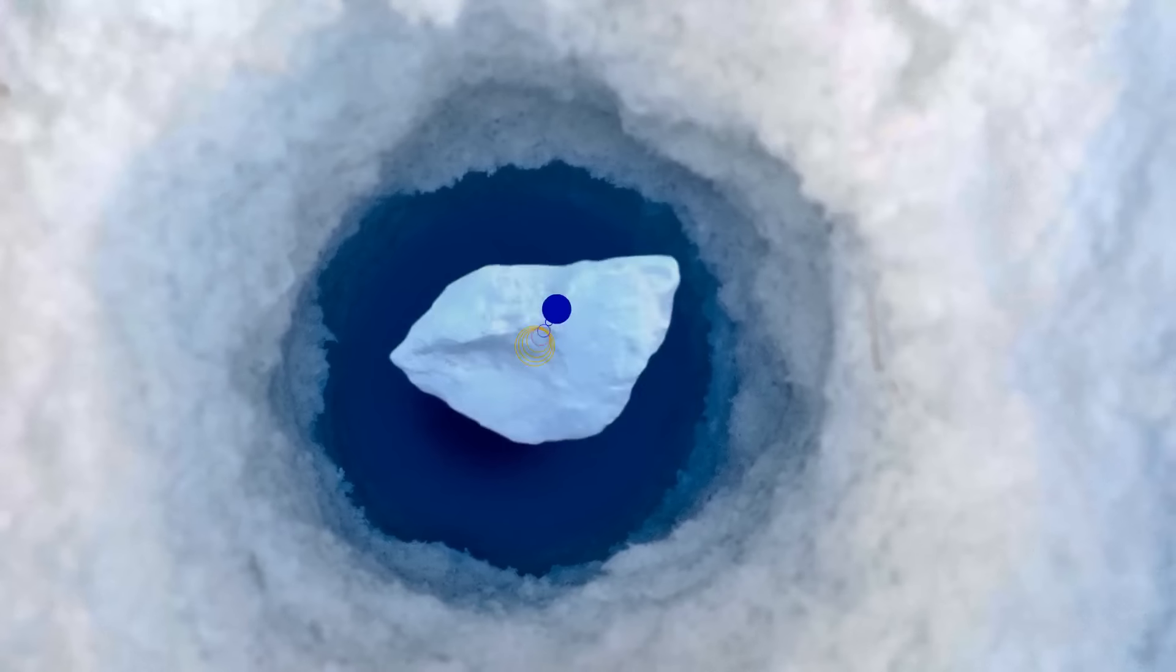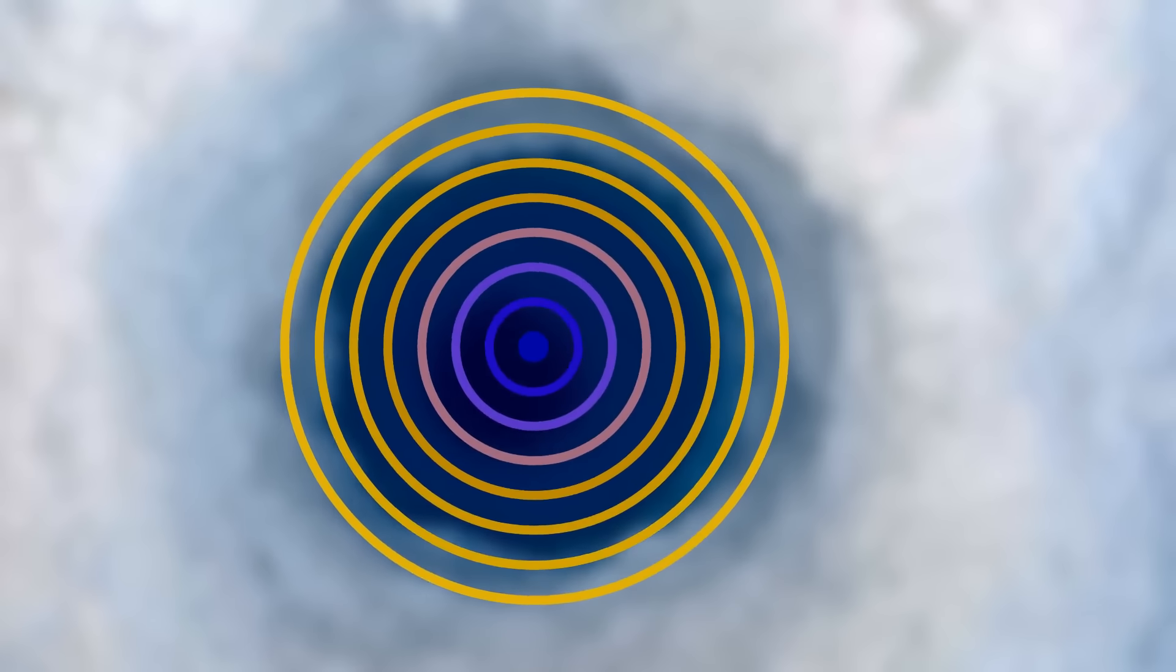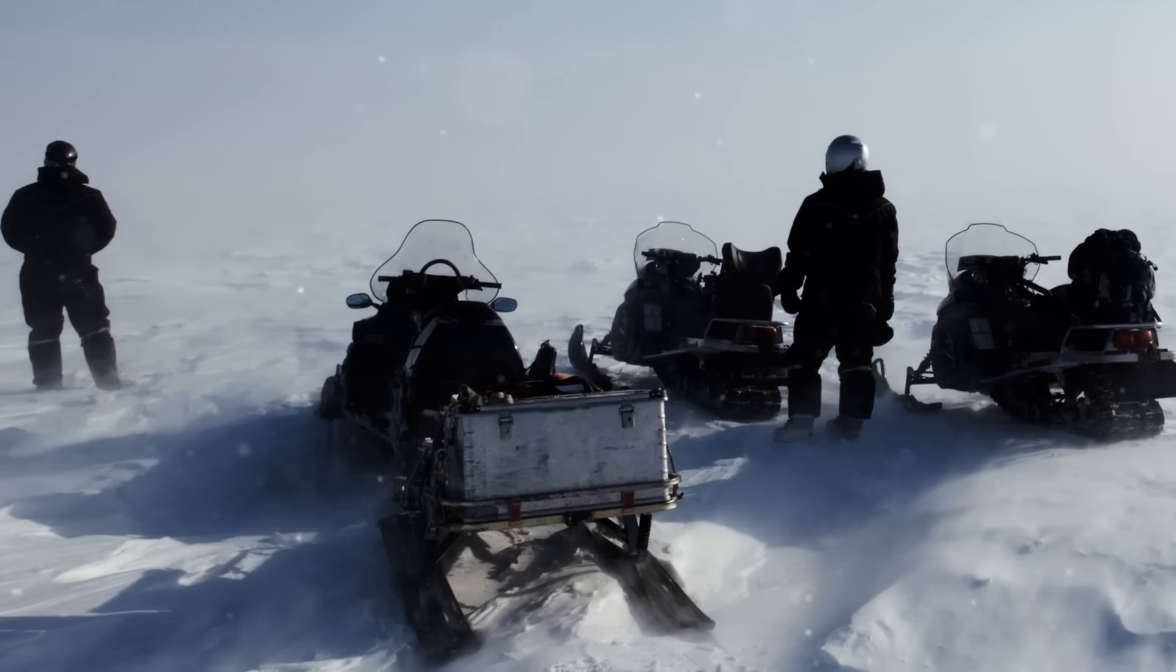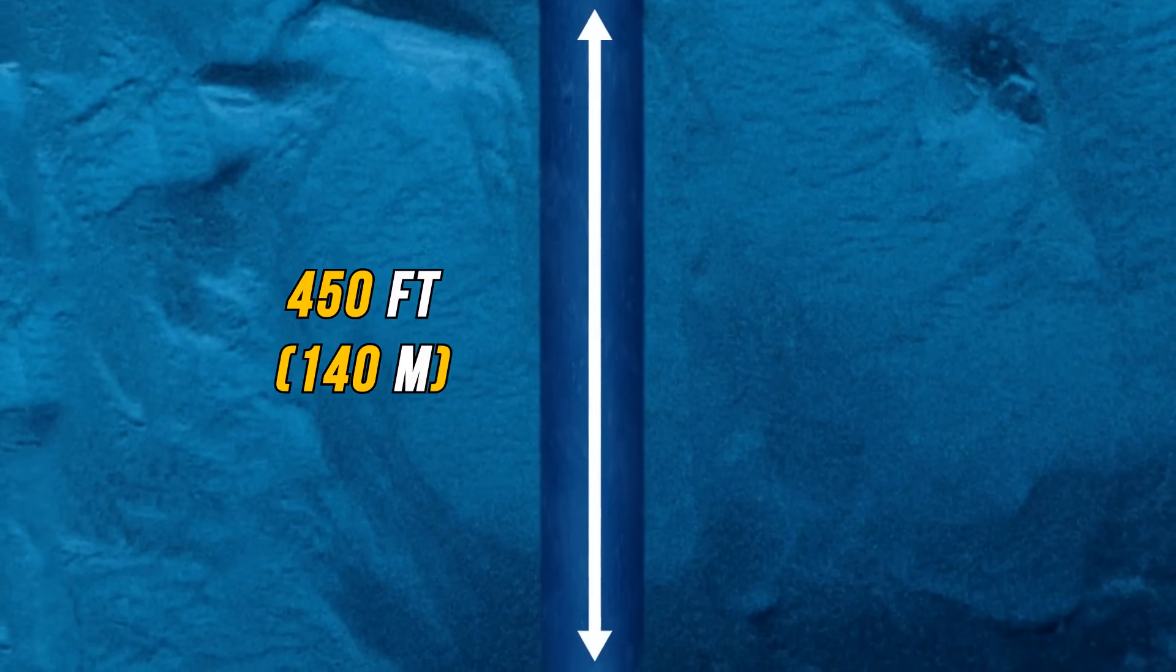So when the scientists dropped the ice block down the bottom of the hole, the sound waves traveled back up and bounced around the narrow tube where they drilled. That's why they got the pew pew sound. Let's not forget that this ice block traveled 450 feet beneath us.